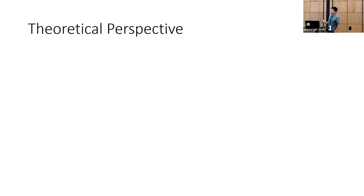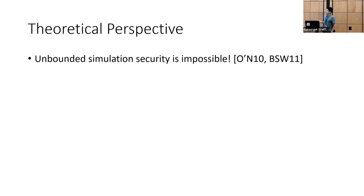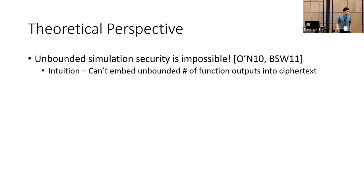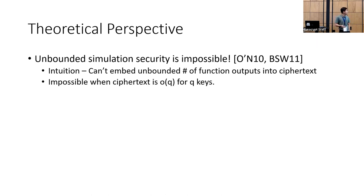Looking at bounded collusion functional encryption from a more theoretical perspective: full functional encryption is pretty hard to construct, and in fact, using the simulation definition, unbounded fully collusion-resistant functional encryption is actually impossible. The basic intuition is that since the simulator doesn't know the message itself, when it needs to simulate the ciphertext, it needs to program in all the function outputs. The impossibility result rules out any simulation security, even for bounded collusion functional encryption, when your ciphertext is sublinear in your number of keys.